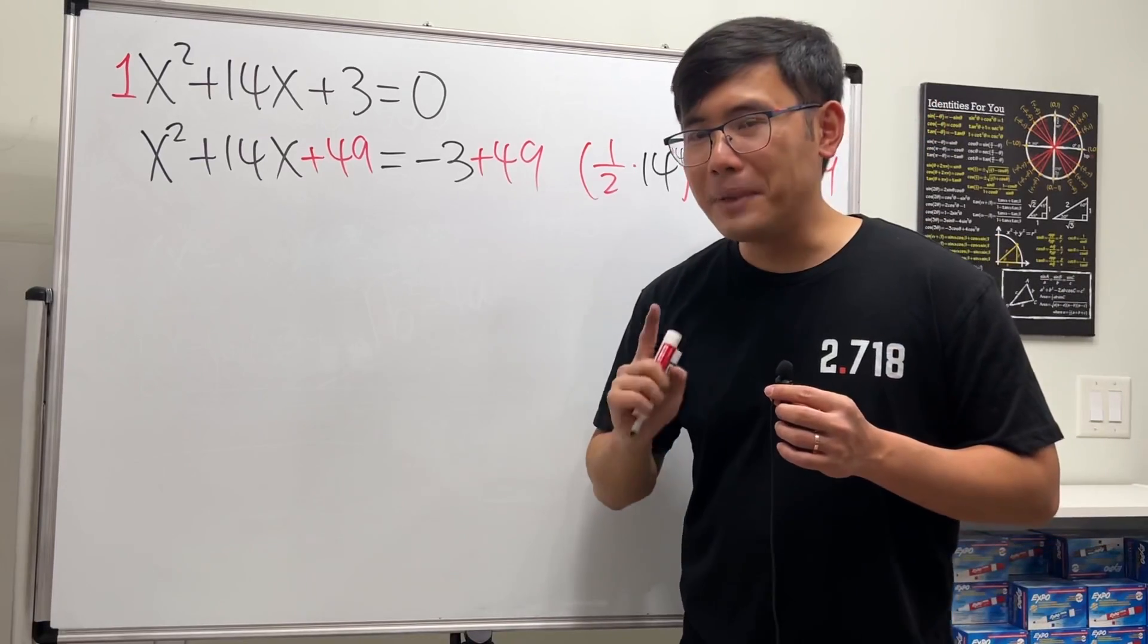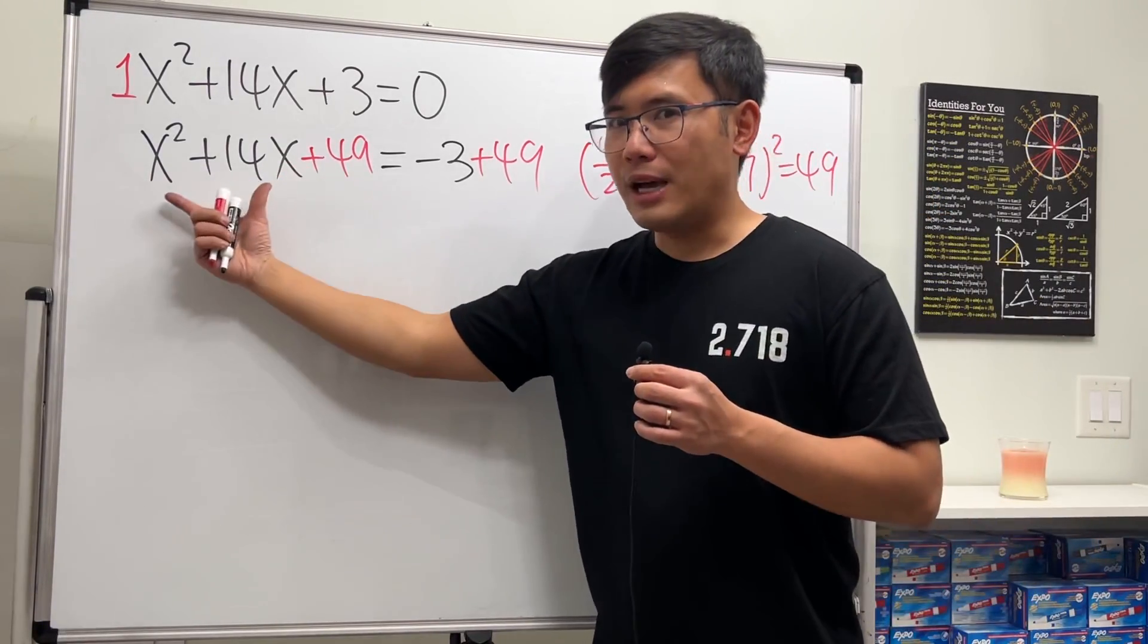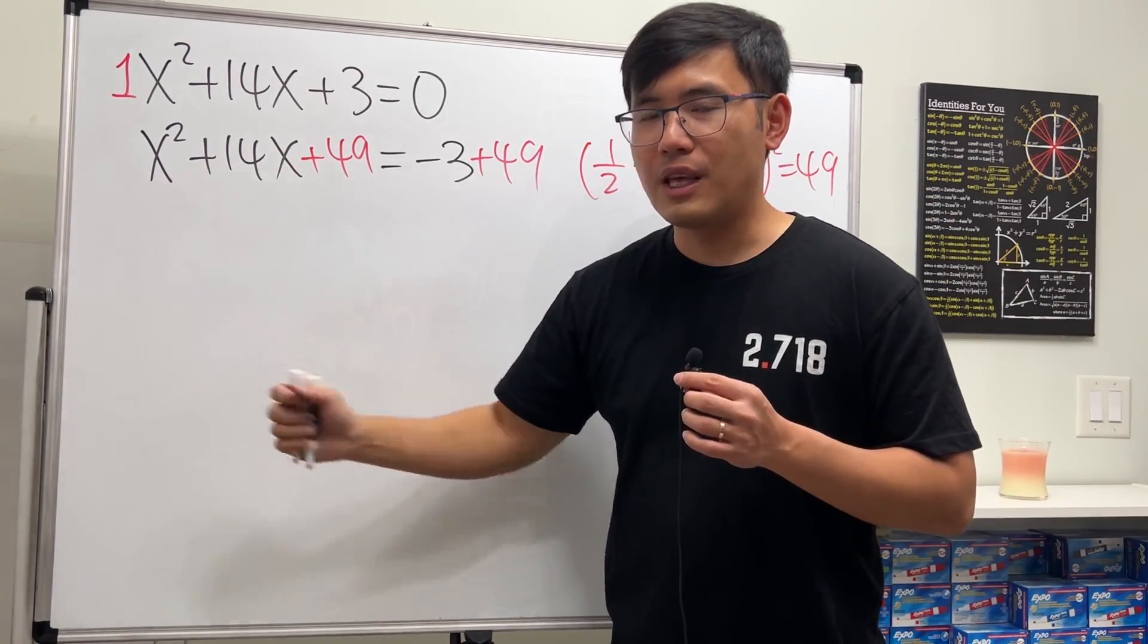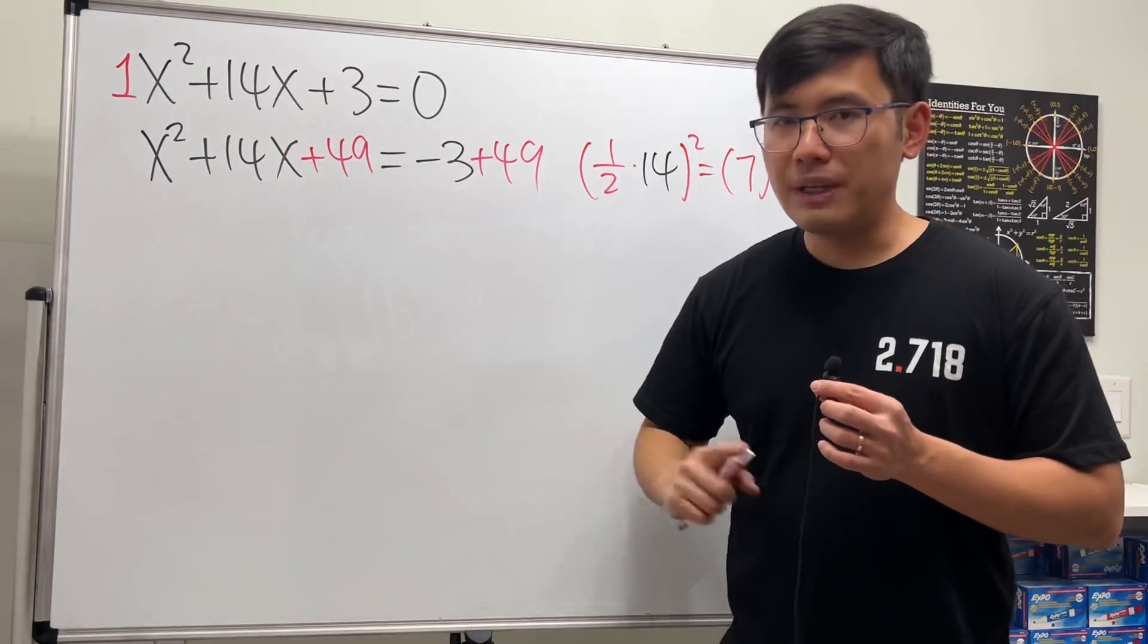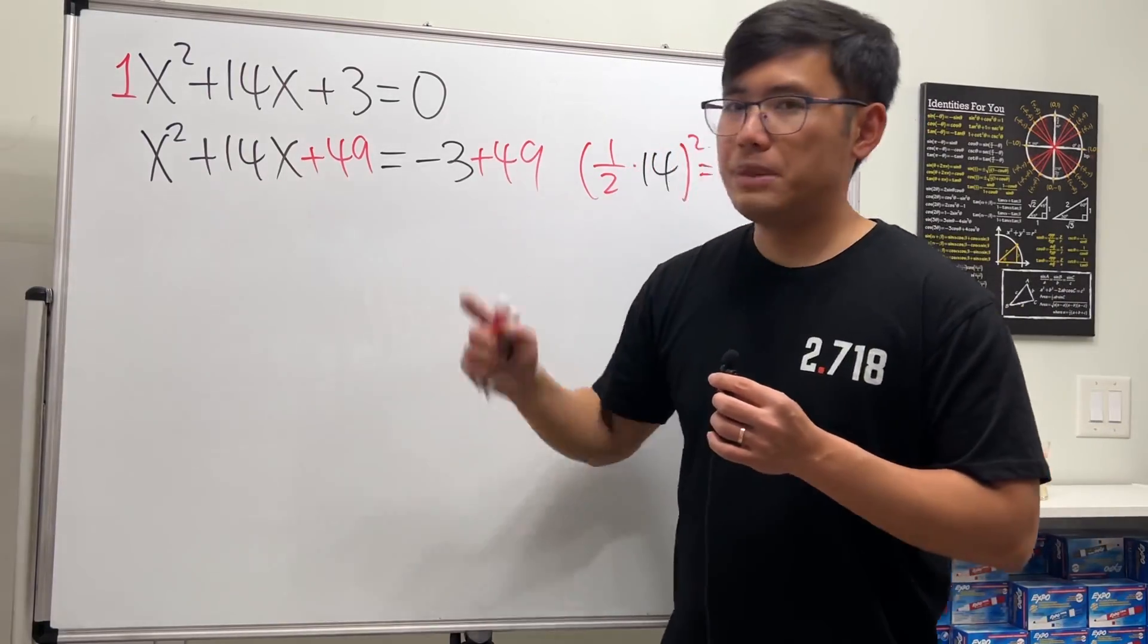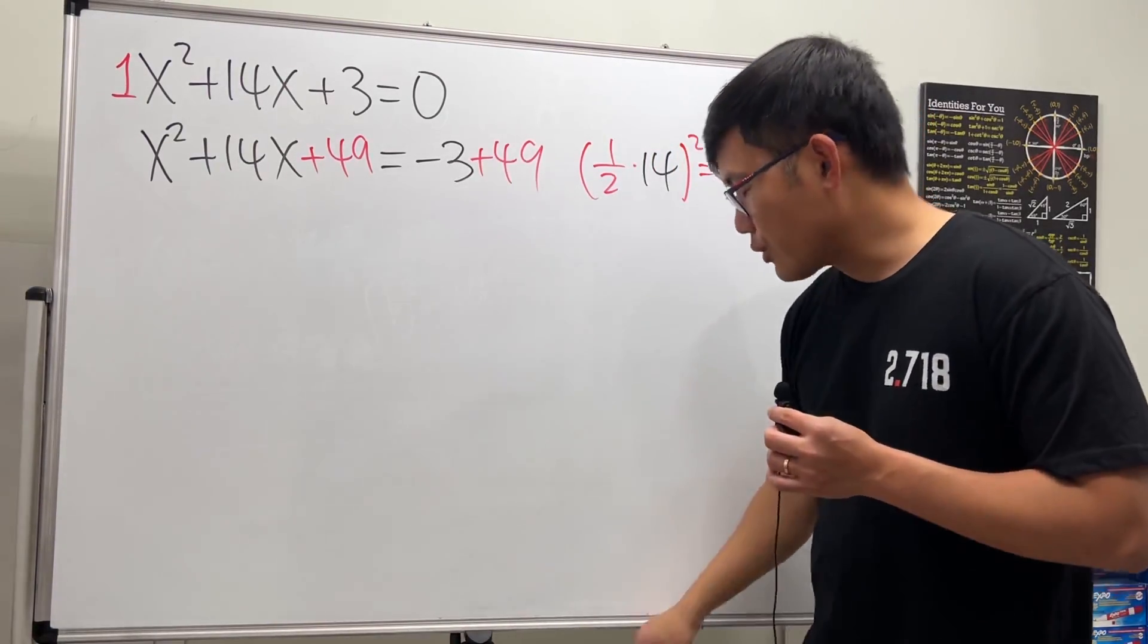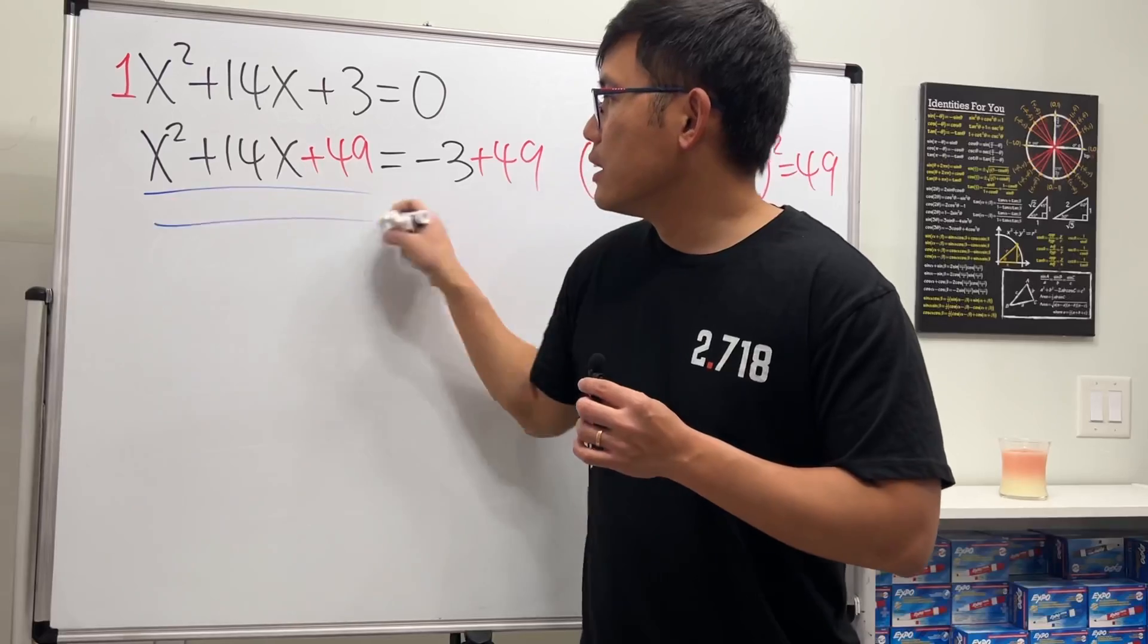This number is so magical because we can actually make the left-hand side factorable—guaranteed. You see, originally it was not factorable, but right now it's factorable. Better yet, this will always be a perfect square. I'll show you real quick.